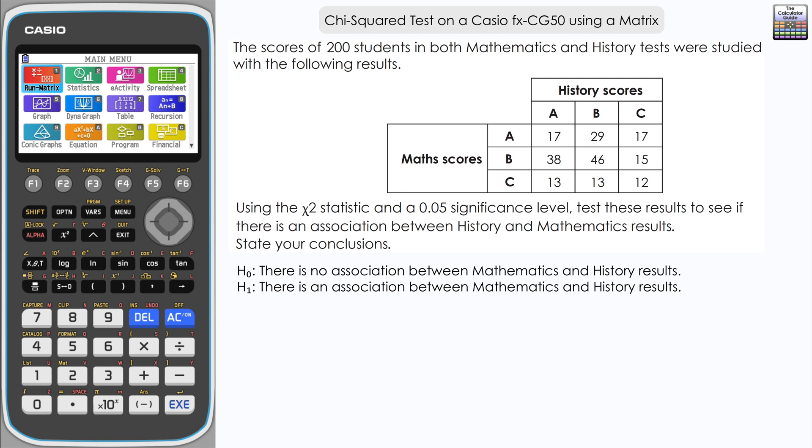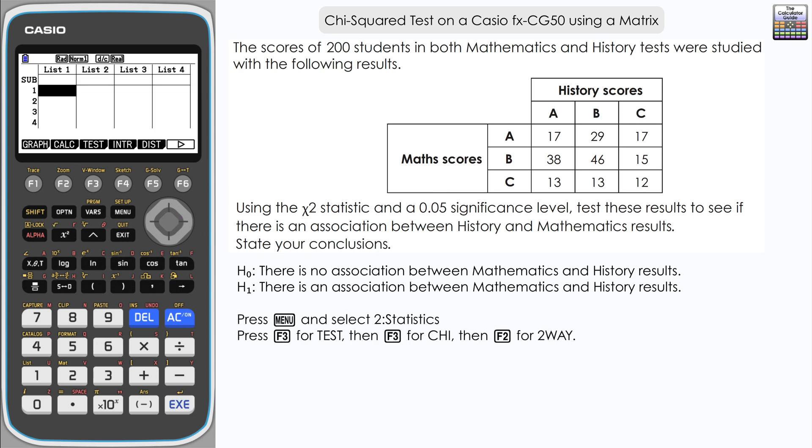We need to input this contingency table into the calculator. We're going to go to statistics mode, that's option 2 from the main menu. Press F3 for TEST, then F3 a second time for CHI. We've got two choices here: goodness of fit and two-way. We've got a two-way contingency table, so select F2 for 2WAY and you can see the options for where we're going to input our data.